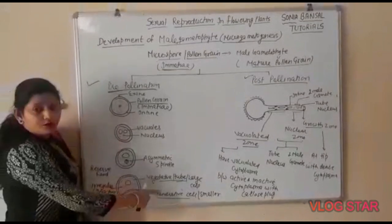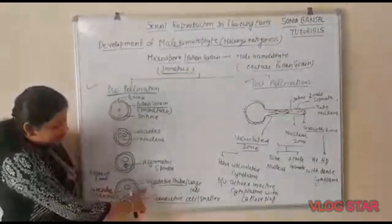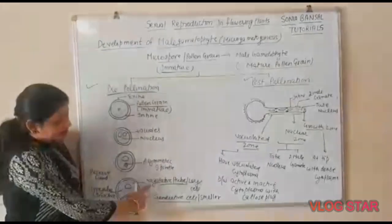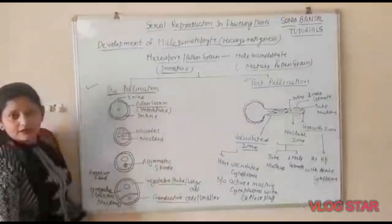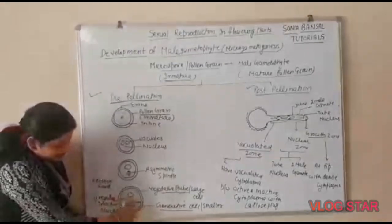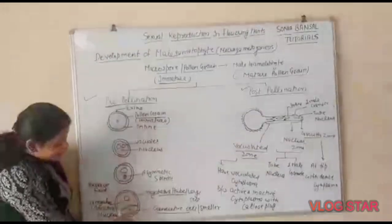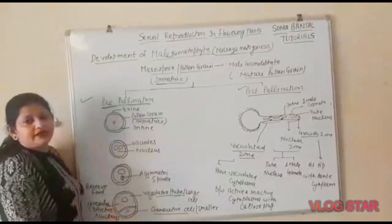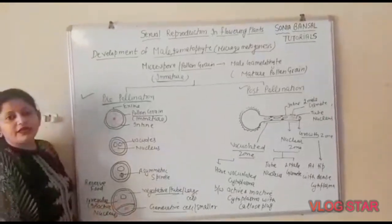There are two cell stages: one is the vegetative cell and the second is the generative cell. The vegetative cell is also called the tube cell. The generative cell has a nucleus and cytoplasm. It later divides to form two male gametes.